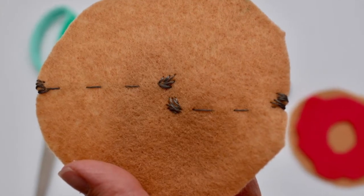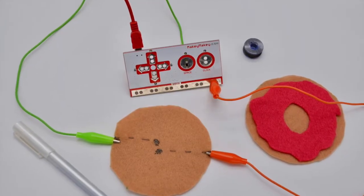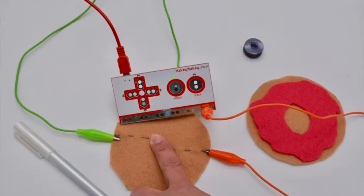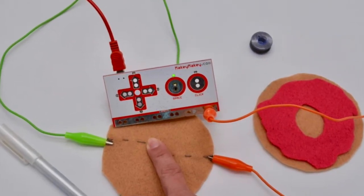And then you're ready to test it with Makey Makey. Hook one alligator clip to earth and one to space, and then use your finger to test your circuit. If it lights up the Makey Makey, then you're ready to finish your doughnut.